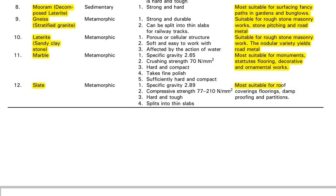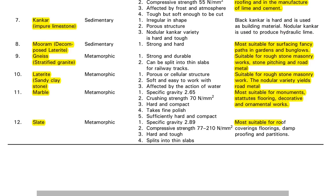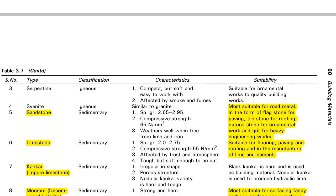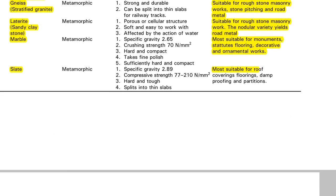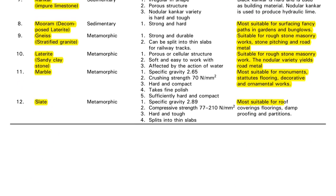Marble is a very important stone. It is classified under metamorphic rock. Its specific gravity value is 2.65 and its crushing strength is 70 Newton per mm square. Marble is most suitable for monuments, statuettes, flooring, decorative, and ornamental works. Note: serpentine is simply 'suitable' for ornamental works, but marble is 'most suitable' for monuments, statuettes, flooring, and decorative and ornamental work.